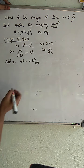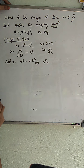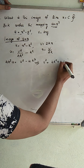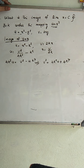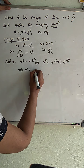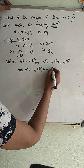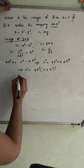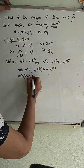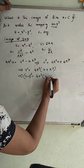Substituting X equal to V over 2K into U, we get V square over 4K square minus K square. Simplifying, 4K square times U equals V square minus 4K raised to 4. Taking V square to the left and rearranging, we get V square equal to 4K square times U plus K square, which can be written as V minus 0 whole square equal to 4K square into U minus minus K square.